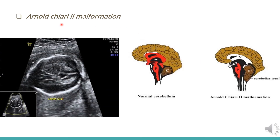Myelomeningocele is also associated with Arnold Chiari type 2 malformation. In this condition, the cerebellar and brain stem tissue slip down into the foramen magnum. Signs and symptoms of Chiari malformation are related to the cerebellum. On the USG image you can see the lemon skull sign, which is one type of sign and symptom. It may also result in blockage of CSF, causing a condition called hydrocephalus, which I will discuss in my next lecture.